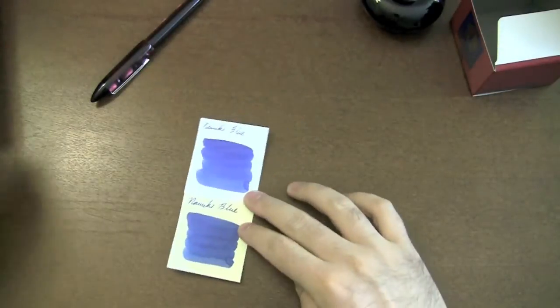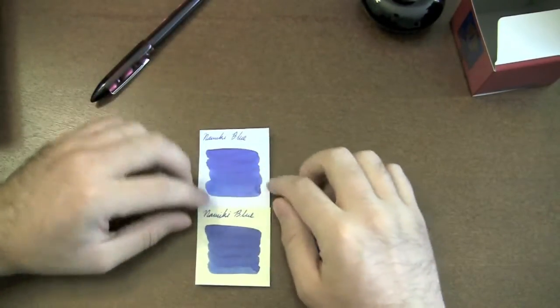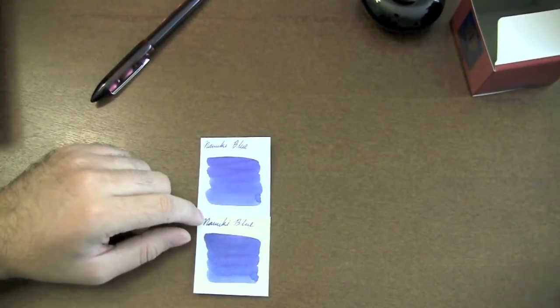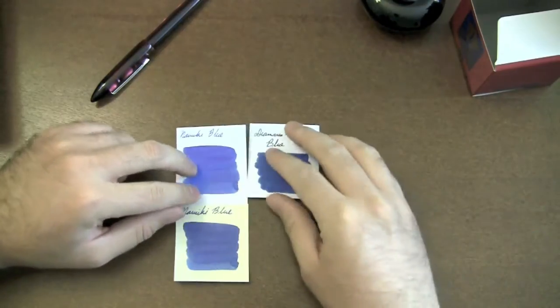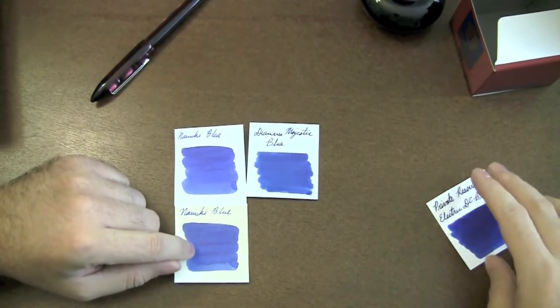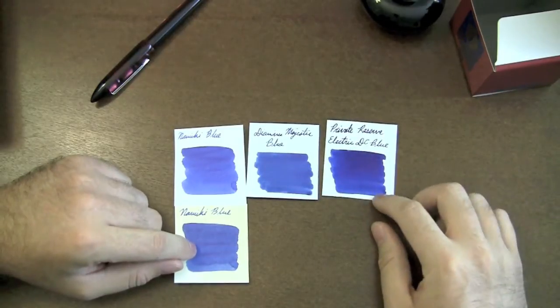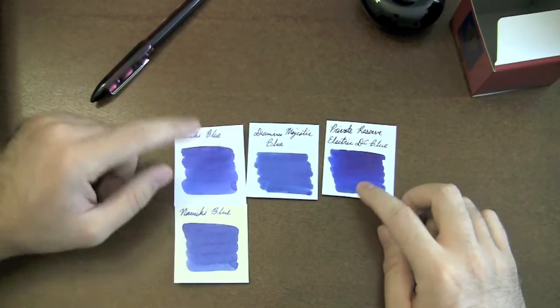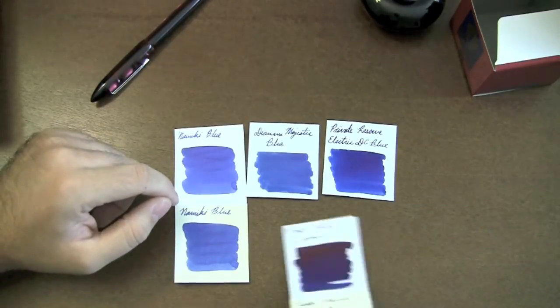Now, the swabs that I have here to compare. I have the Namiki blue. Of course, in a swab, it's going to look lighter than it does in a pen, but the comparable inks that I have to it, I have Diamine Majestic Blue is fairly comparable. Private Reserve Electric DC Blue, a little bit darker, but still, all of these have that red sheen to it.